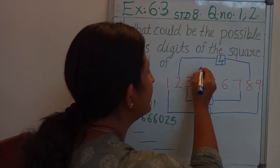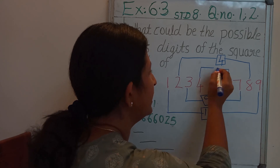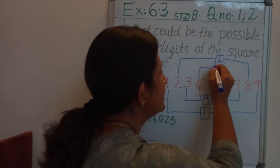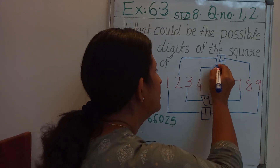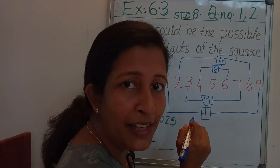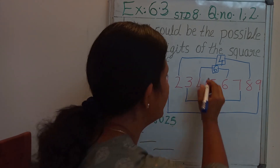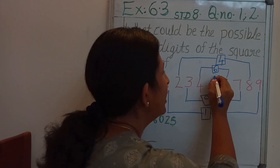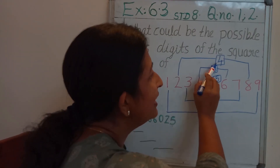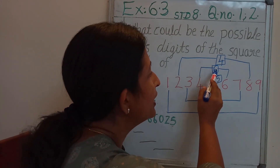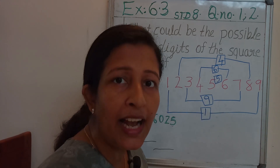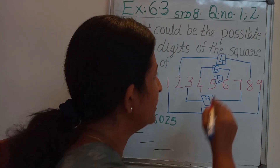If a number is ending with 4 or 6, its square should end with 6, because 6 sixes are 36. If a number is ending with 5, then 5 fives are 25, so its square should end with 5. Now, see here — the numbers ending with 4, 6, 5, 9, or 1 are the square numbers.